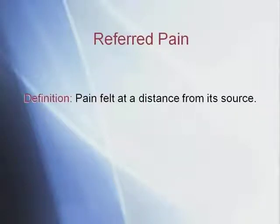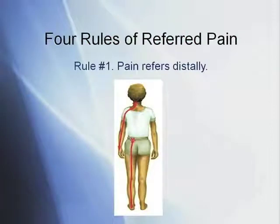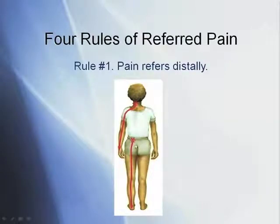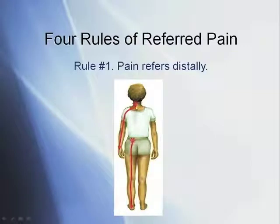Referred pain is pain felt at a distance from its source — the injury is in one place, and the pain is in another place. There are four rules of referred pain in orthopedic medicine. Rule one: pain refers distally. The pain will originate, say, in the low back or sacrum, and go distal — down the leg toward the foot, not upward. Similarly, with a neck injury, pain goes down the arm. Pain always goes distal, not proximal.